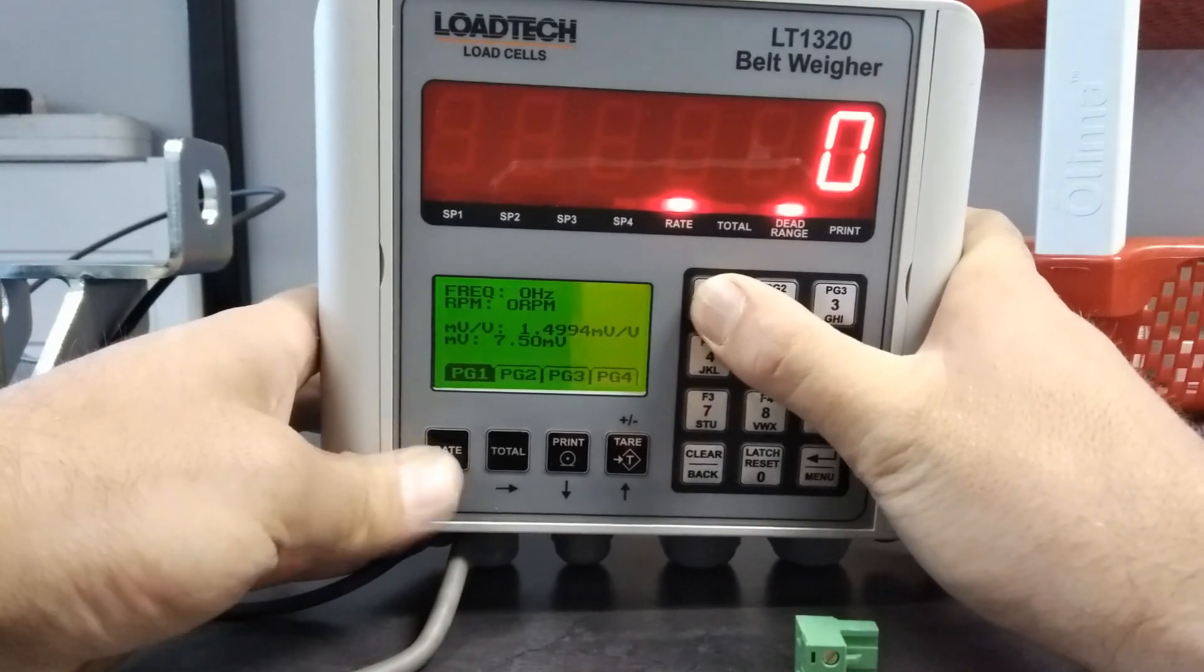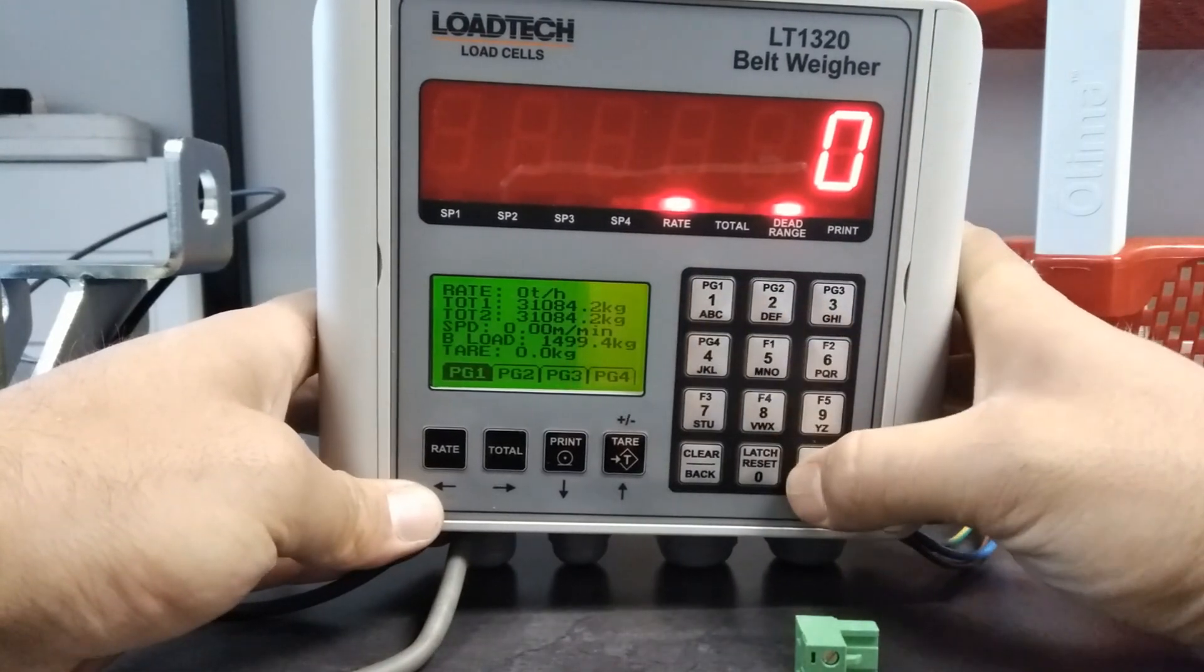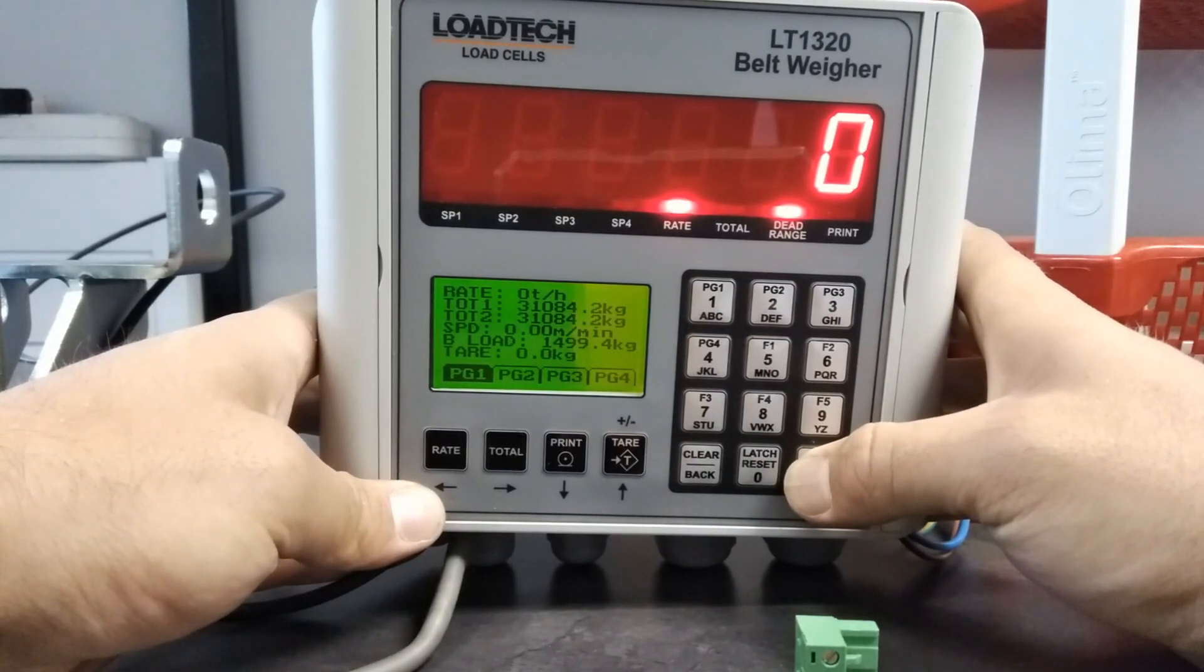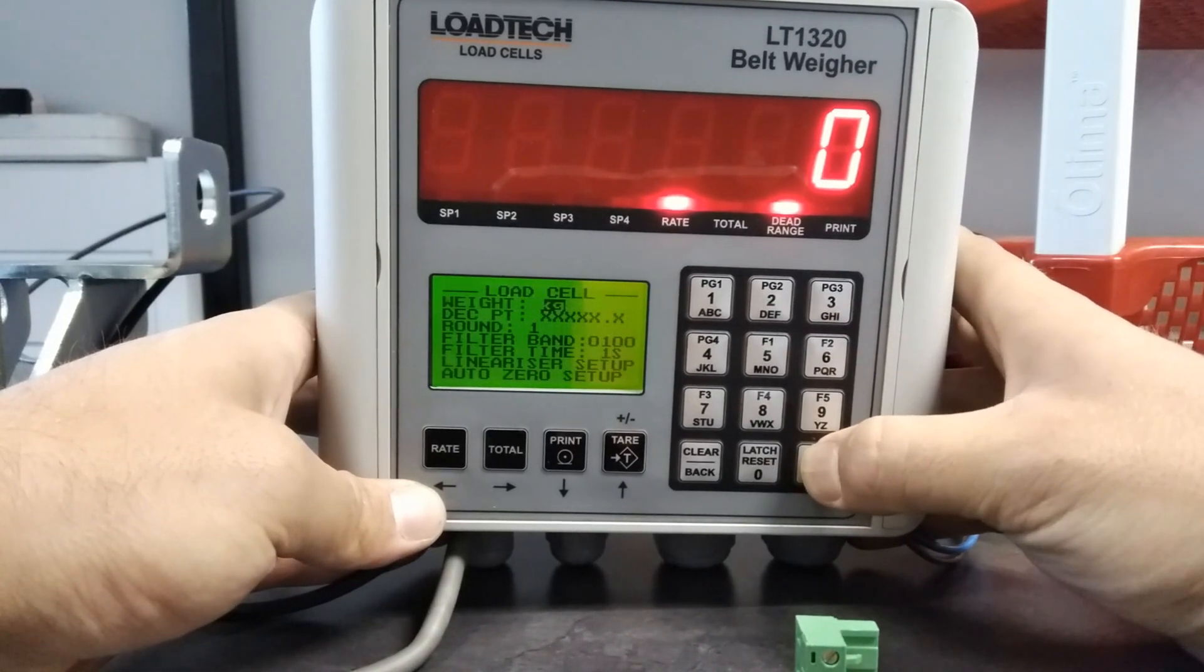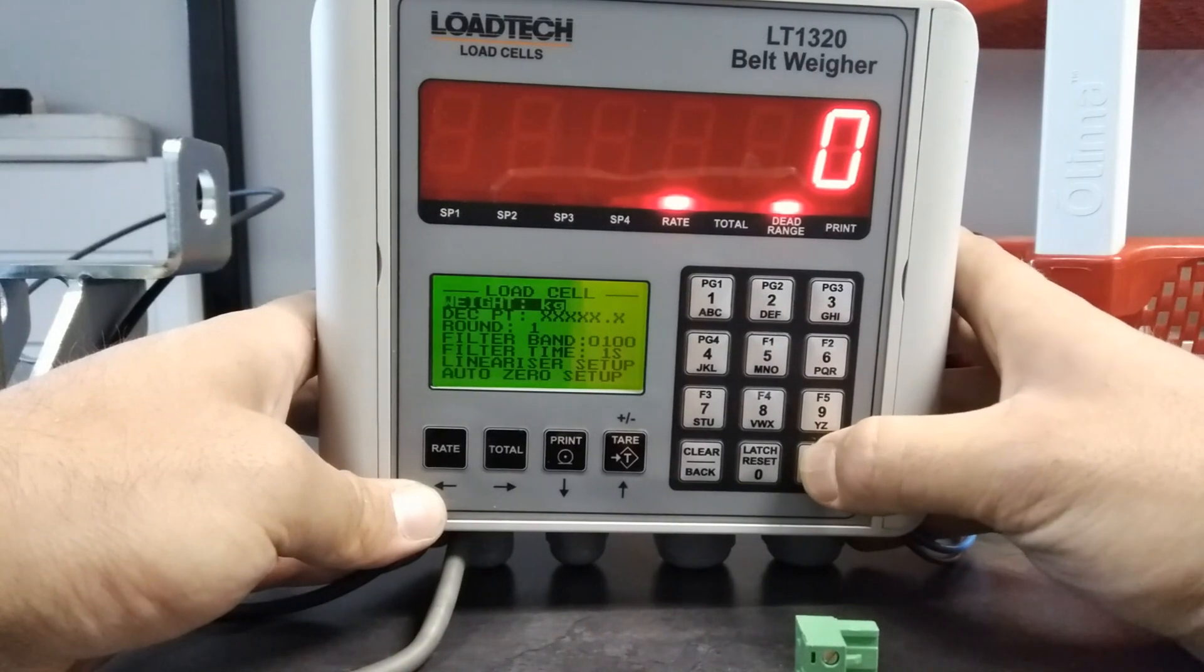To set up the LT1320 belt weigher, enter the menu, enter the belt weigher setup, enter the load cell setup, and change your weight and decimal point.